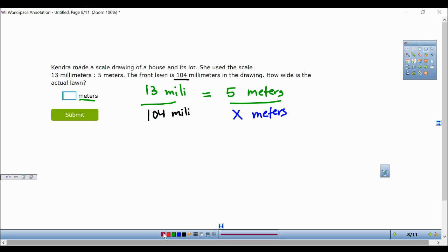Now in this case, we're going to cross-multiply. 13 times x gives me 13x is equal to 104 times 5, which is going to be 520.